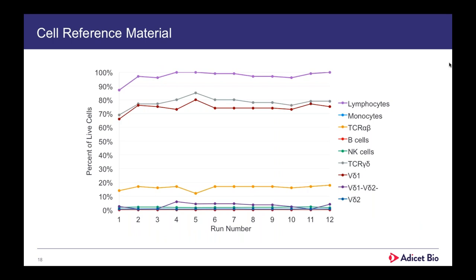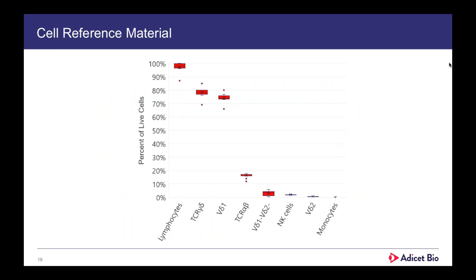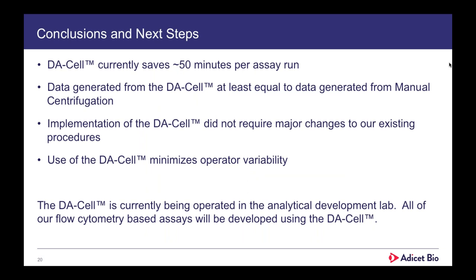This slide shows reproducibility of reference material over time. We use a frozen bank of cells that we can thaw for every single run. Over 12 runs spanning almost four months, the relative frequencies of each subset, while there's some fluctuation, are fairly consistent across the board. This is completely independent runs with completely independent users running the analysis, and still we maintain consistent percentages of each population. Compiling this data as a box-and-whisker plot, you can see very tight specs. We can develop an internal certificate of analysis for our reference material so we know exactly how well our flow cytometry panel is performing — highlighted by the optimization we got with implementation of the DA cell.